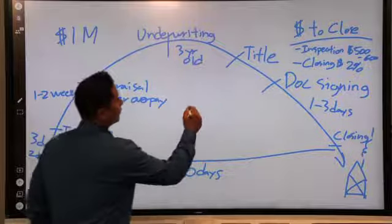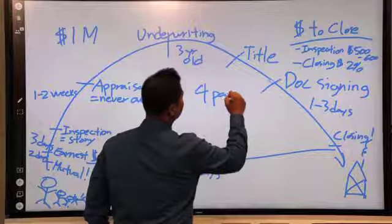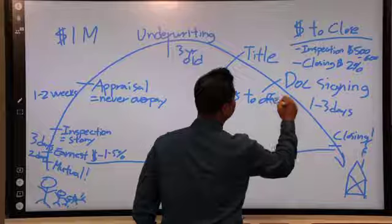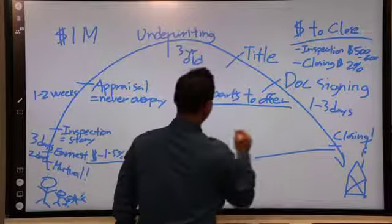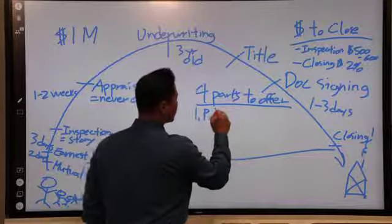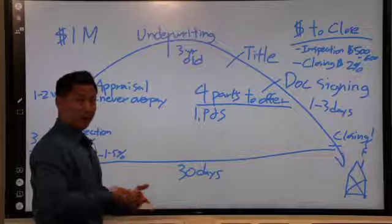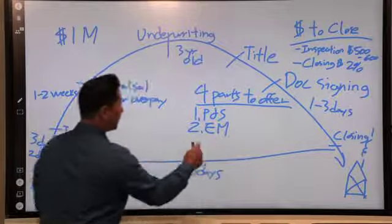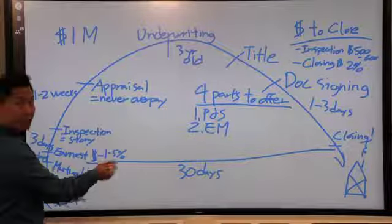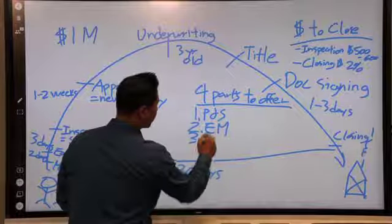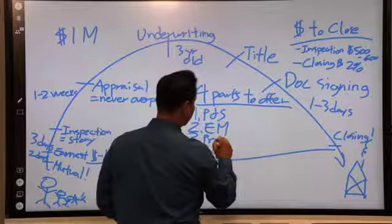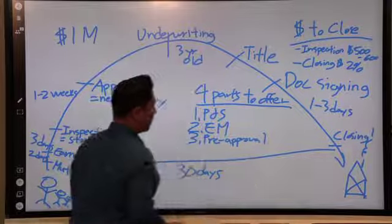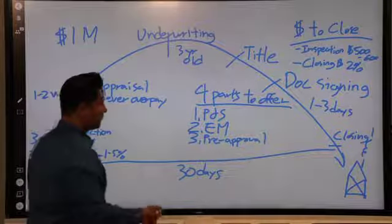And the four parts to an offer is number one, what we call the purchase and sale. So the actual contract, right? We have the earnest money, which is right here. We have the pre-approval done by Jeff and his team. And number four.